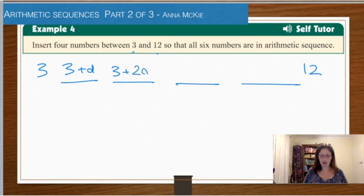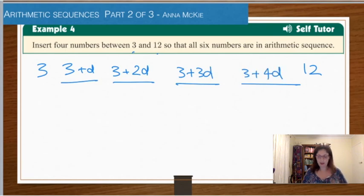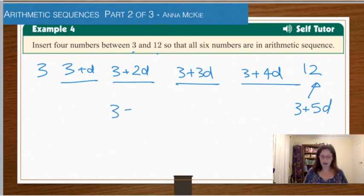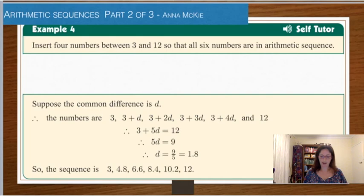It's consecutive. So we've got two lots of difference there. Three plus three lots of the difference. Then three plus four lots of the difference. And this number twelve is the next term along. So another way of thinking of that is three plus five lots of the difference. So you could actually start by writing out an equation there. Three plus five lots of the difference is equal to twelve. There you go, you can solve for d now.